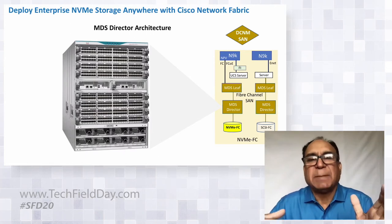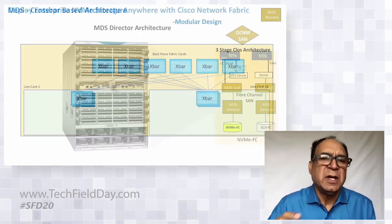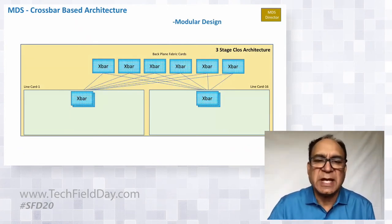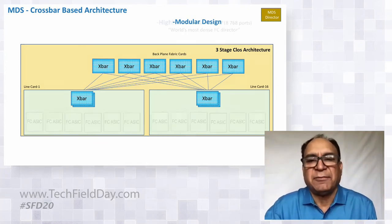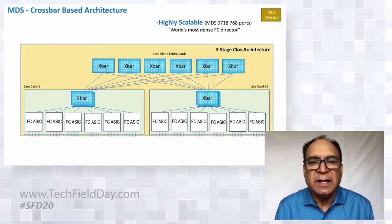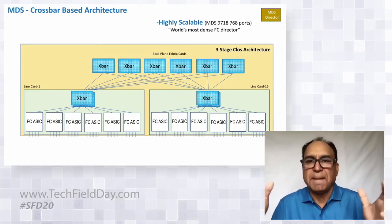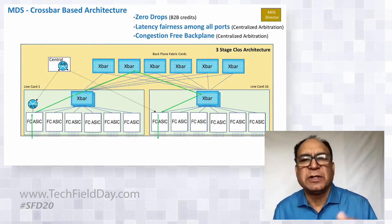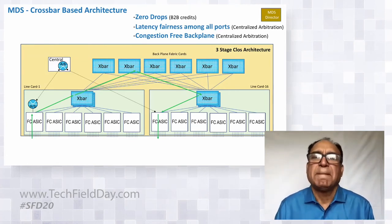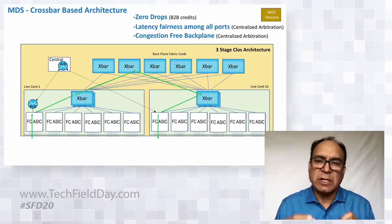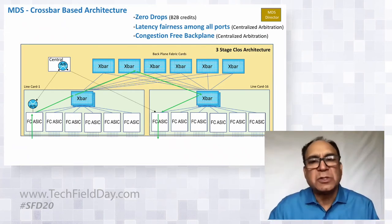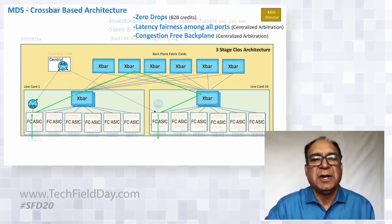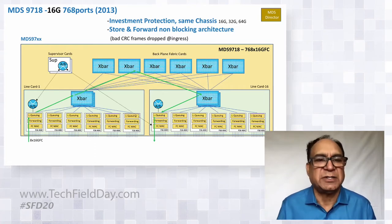It is the same infrastructure, but as you go to higher speeds, the MDS architecture is required. MDS is a crossbar-based architecture — as the packet comes into the backplane, we have a very high-speed crossbar, making it very scalable. We've productized it up to 16 line cards, making it the world's most dense Fibre Channel director. With this crossbar architecture and central arbitration, we can provide latency fairness among all ports and a completely congestion-free backplane.